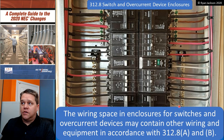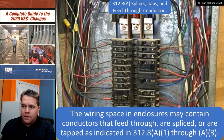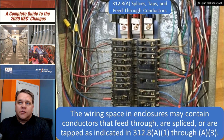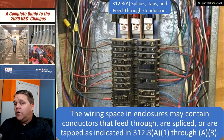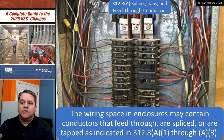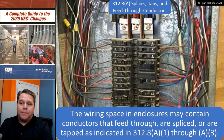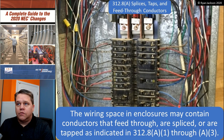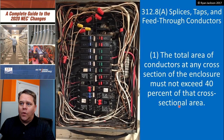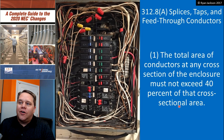The wiring spaces in enclosures for switches and overcurrent devices can contain other stuff in accordance with (A) and (B). Part (A) talks about splices, taps, and feed-through conductors. The wiring space in enclosures can contain conductors that feed through or are spliced or tapped as indicated in items A1, A2, and A3.